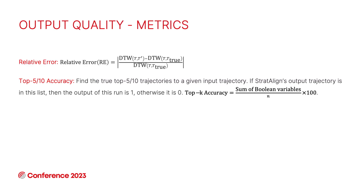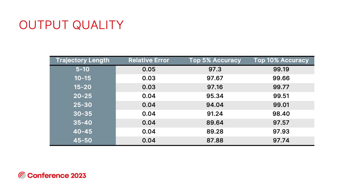For output quality — our approach relies on excluding most of the search space, so we need to ensure we don't accidentally exclude the most similar trajectory. We evaluate this using three metrics: relative error, top-five accuracy, and top-ten accuracy. For top-five and top-ten, we find the actual most similar trajectories and check whether our output is in that list. The results show the relative error is almost negligible — at maximum 0.05 for the shortest trajectory length — and for the top-five and top-ten accuracy, our output is almost always there.